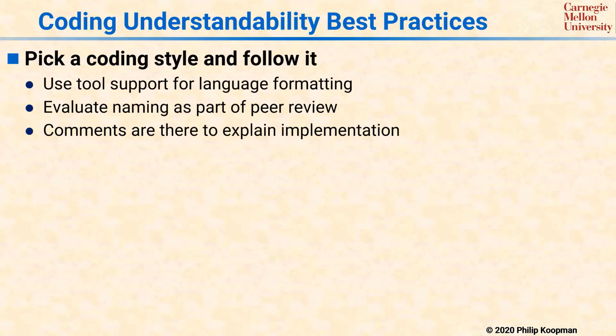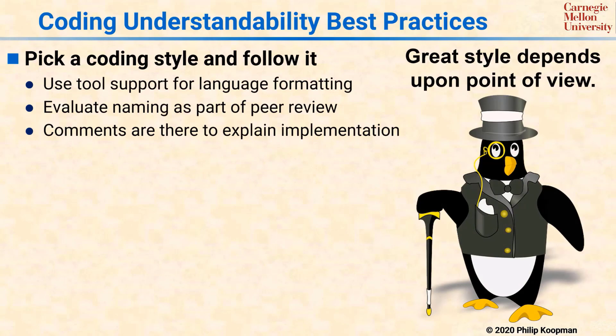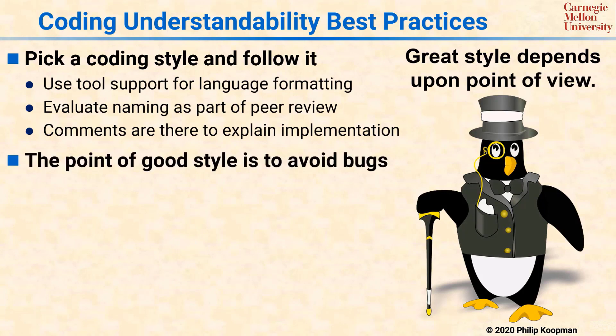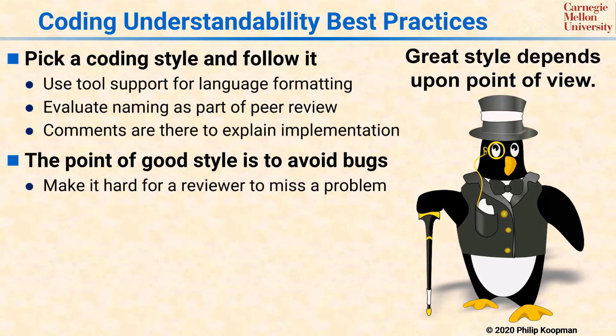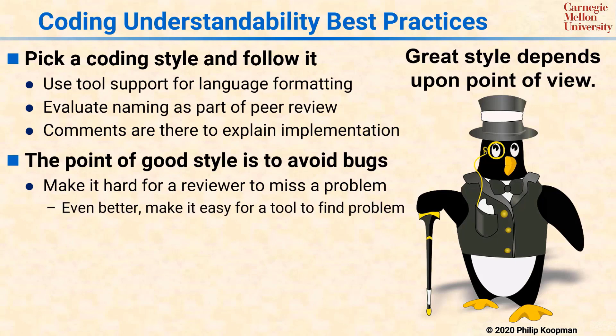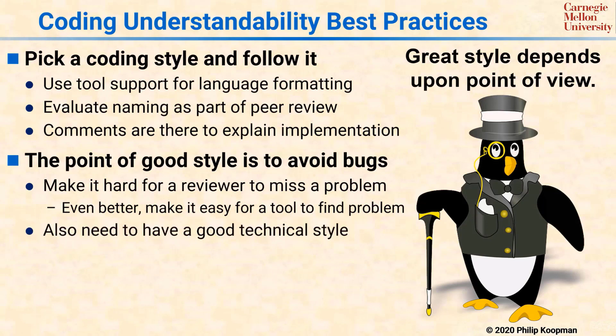To some degree, good style is in the eye of the beholder. By this, I do not mean that anything goes, but rather that there are many possible variations of good style, and the goal of having coding style is not to have style for style's sake, but rather to avoid bugs. In particular, your style should make it hard for a reviewer to miss a problem, and even better, your style should make it easy for a tool to find a problem. You also need to have a good technical style to make it easier for the compiler to point out potential bugs, but that's the topic of a different tutorial.